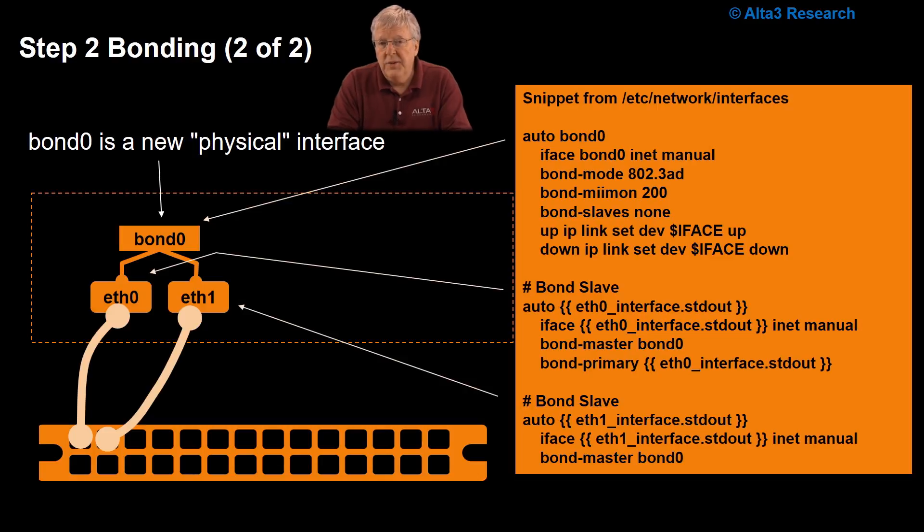Now, the configuration of the bonding on the Ethernet switch is left to you. The configuration of the bonding in the Linux server I'm going to show you here. We're going to create a new physical interface. I know, air quotes, physical. It's hardly physical. I know it's logical, but this is the way we talk. So that bond zero interface is going to be a physical interface.